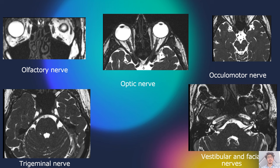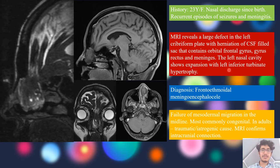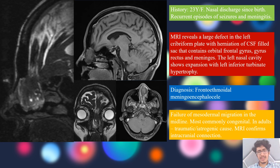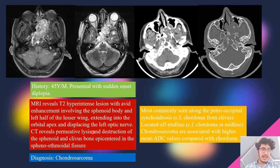This was a case of a 23-year-old woman presenting with nasal discharge, episodes of seizure, and meningitis. MRI revealed a large defect in the cribriform plate with herniation of a CSF-filled sac containing orbitofrontal gyri, rectus muscles, and meninges. The nasal cavity showed expansion with hypertrophy of the left inferior turbinate. This was a case of fronto-ethmoidal meningoencephalocele. It is usually congenital but can also be seen in adults due to trauma or iatrogenic causes.